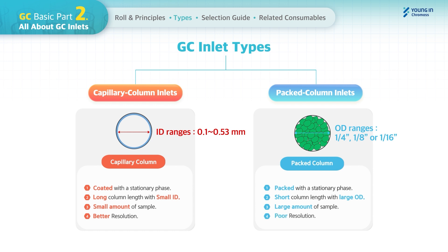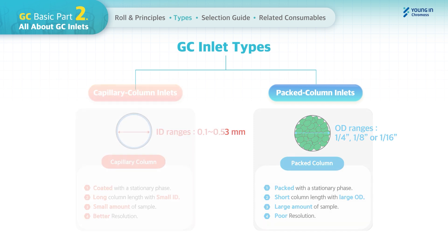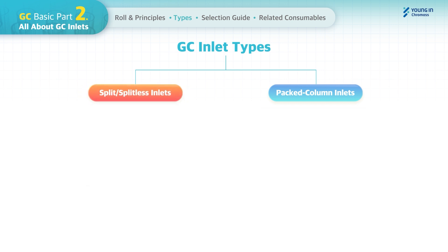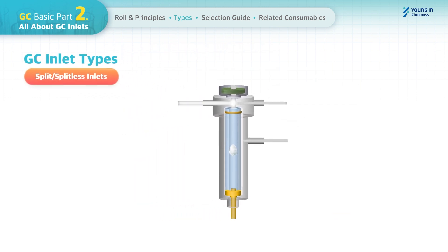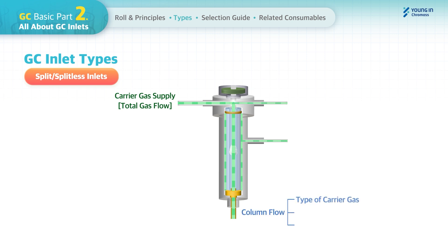The most commonly used inlet for capillary columns is the split/splitless inlet. Let's look at the schematic gas flow by inlet type. In the split/splitless inlet, total carrier gas flows into the inlet, passing through the septum purge line and the inlet liner. In the liner, the set column flow goes into the column while the rest is vented out through the split vent line.